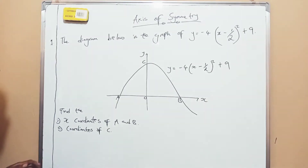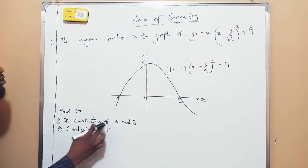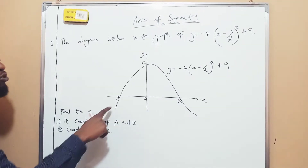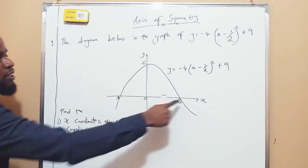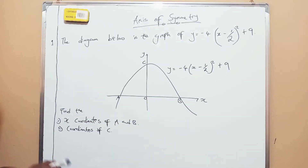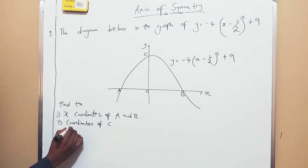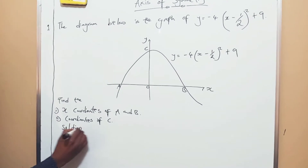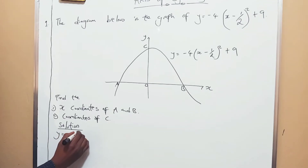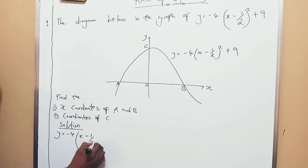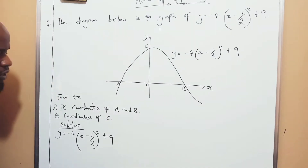So the first question: find the x-coordinates of a and b. They want us to give them the x-coordinates of a and b. So the solution is this. We write our equation first. Y equals negative 4 times (x minus 1 over 2) squared plus 9. So before we go any further, we have to break this bracket first.